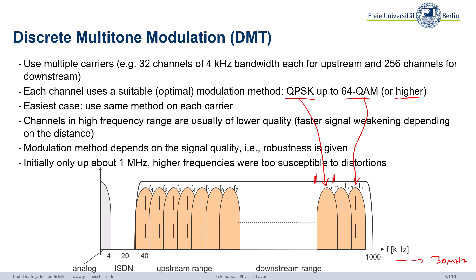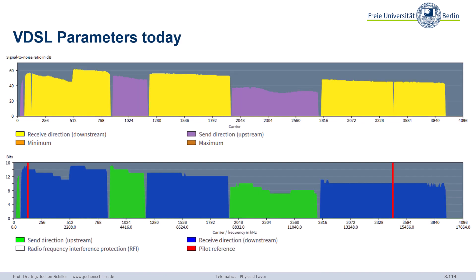Higher frequencies tend to have more errors than lower frequencies, because remember — these all run over Cat3 cables made for classical telephones, designed for some kilohertz, not for several megahertz. So we try our best and squeeze in as many bits as possible depending on the modulation scheme. Initially only up to 1 MHz was used because the modems couldn't handle higher frequencies. Now, with very fast chips, this has changed significantly.